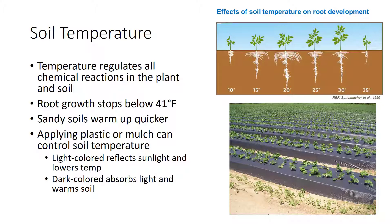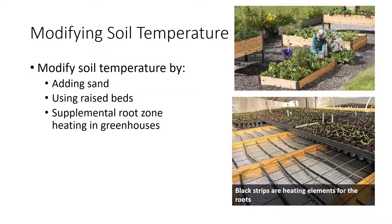In addition, soil temperature is also affected by atmospheric conditions such as air temperature, wind, and solar radiation. Soil temperature can be modified to enhance crop production. Applying plastic or mulch to the soil surface is one way to control soil temperature effectively in the field. Covering the soil with different colored plastics and mulches has been shown to be very effective. Using light-colored plastic or mulch reflects sunlight and lowers soil temperature, while using dark-colored plastic or mulch absorbs light and warms the soil. Some growers use black plastic or mulches to raise soil temperature to start crops early. Another way to modify soil temperature is to promote adequate drainage by adding sand or using raised beds.